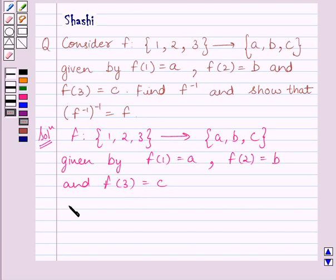Now we can write f as the set of ordered pairs: (1, a), (2, b), and (3, c).